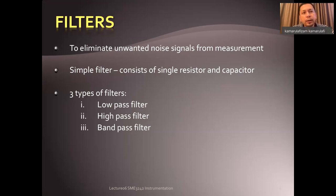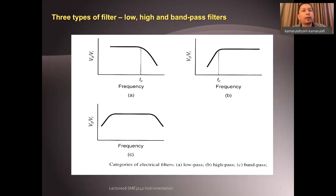There are three types of filters. You have a low pass filter, a high pass filter, and a band pass filter. Looking at the filter response diagrams A, B, and C: diagram A is a low pass filter, diagram B is a high pass filter, and diagram C is a band pass filter.